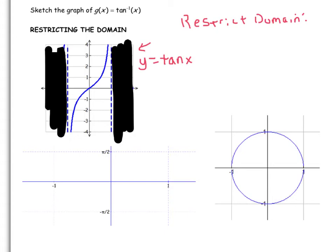And so now, what we will do is sketch the inverse. So again, our restricted domain is negative π/2 to π/2, soft brackets, because those are asymptotes.